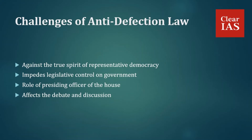The law impedes the oversight function of the legislature over the government by ensuring that members vote based on decisions taken by the party leadership. In short, if legislators are not able to vote independently, they would not act as an effective check on the government. The anti-defection law in effect dilutes the separation of powers between the executive and the legislature and centralizes power in the hands of the executive.